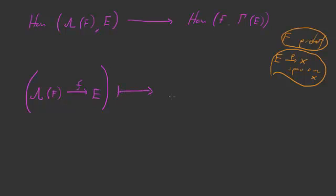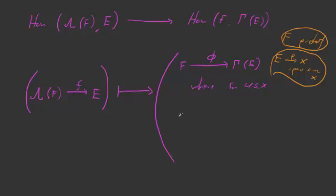This had better be mapping to some functor morphism. It's going to map to the functor morphism from F into gamma of E — we'll call this φ — where for a given open set U of X, we define F(U) into gamma(E)(U). This is the map which takes the element a and sends it to the composition from U — this is a-dot as I defined in the last video — into lambda of F, and then carried by our map f.